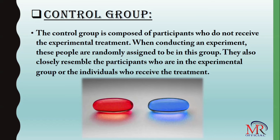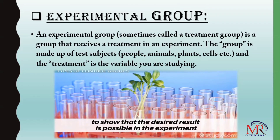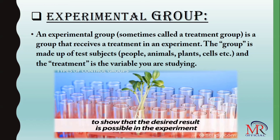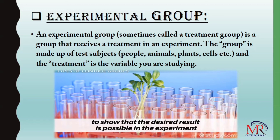We have two groups in order to develop an experiment. The experimental group — sometimes also called a treatment group — is the group that receives a treatment in an experiment. The group is made up of test subjects: people, animals, plant cells. The treatment is the variable you are studying. In the experimental group, we make a group of people, animals, or plants that are actually affected by a disease, and we do treatment and then experiment on them — that is the experimental group.